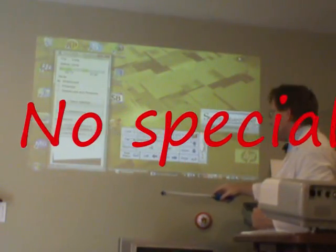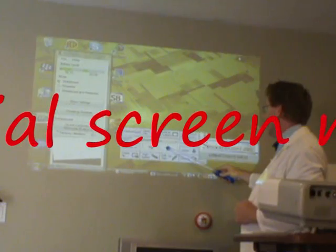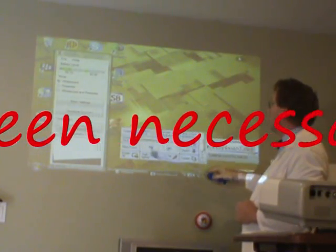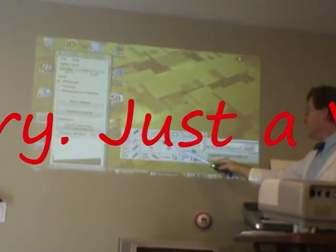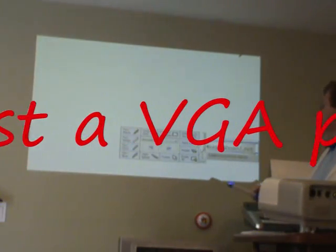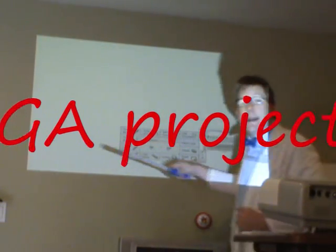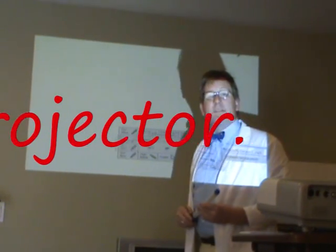Another thing you can do with the system is, of course, turn it into your own classroom whiteboard. Just press this button here, and the entire screen becomes a nice white surface for you to draw on.